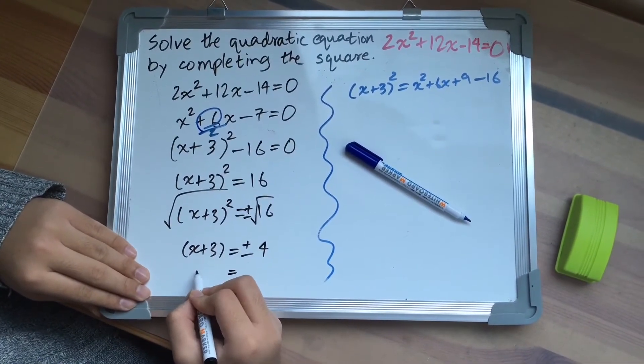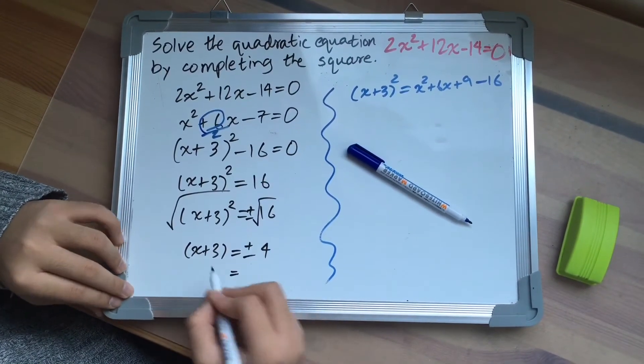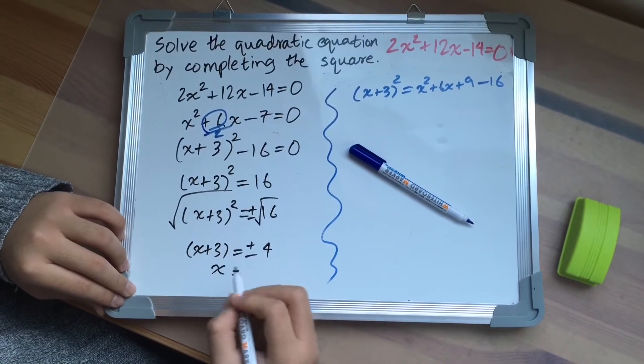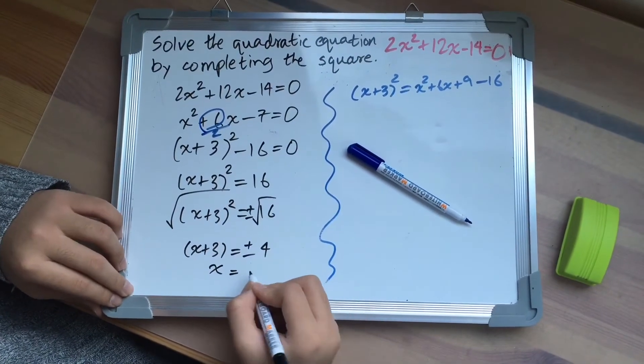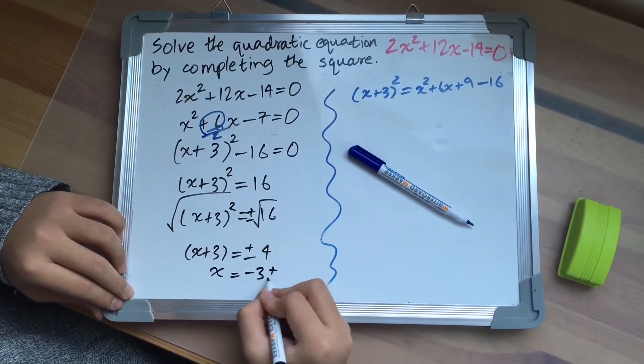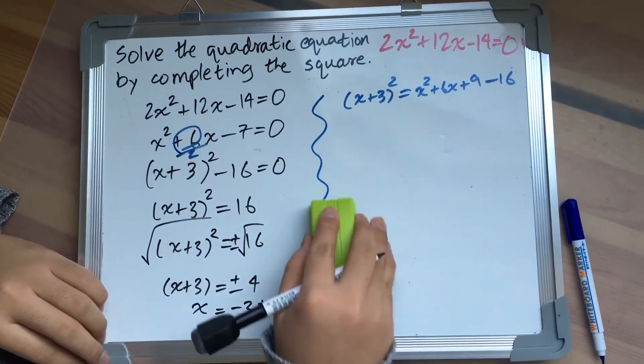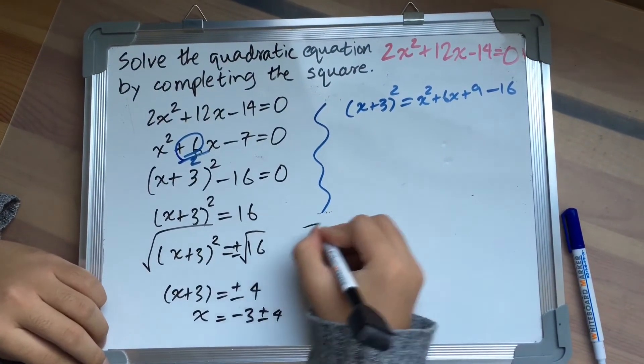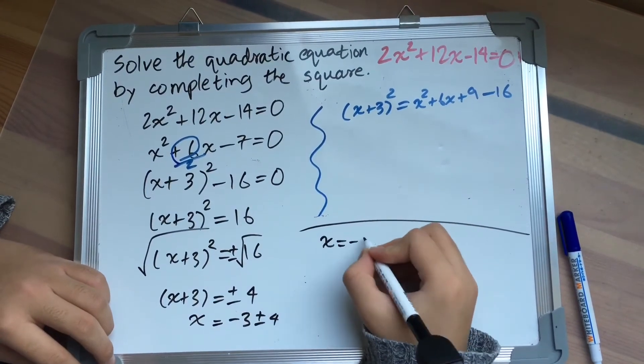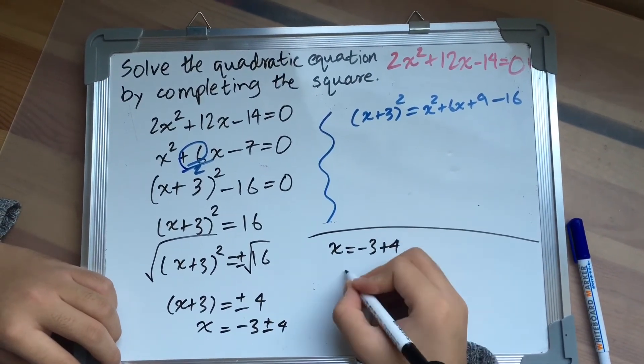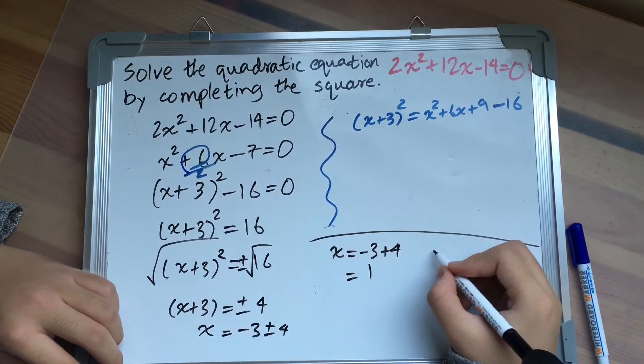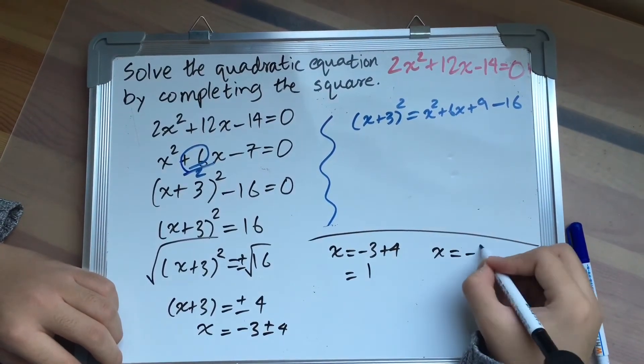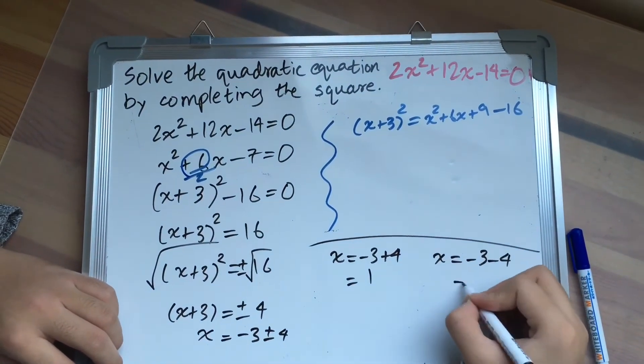Then if you minus 3 from both sides, you'll get x equals minus 3 plus or minus 4. So the answer will be x equals minus 3 plus 4, which is 1, and x equals minus 3 minus 4, which is minus 7.